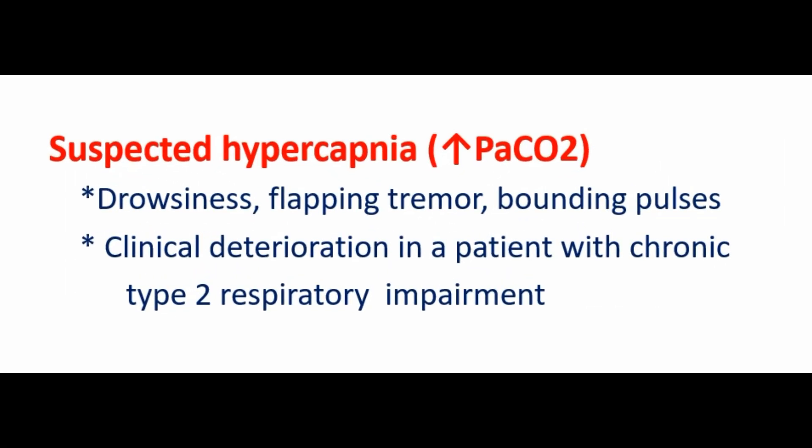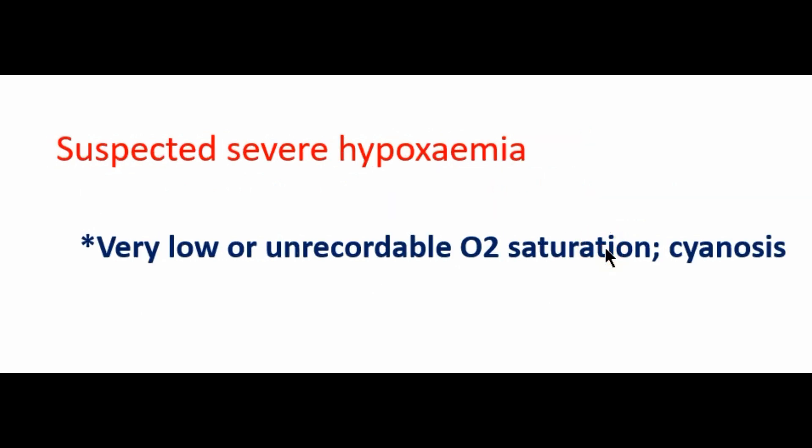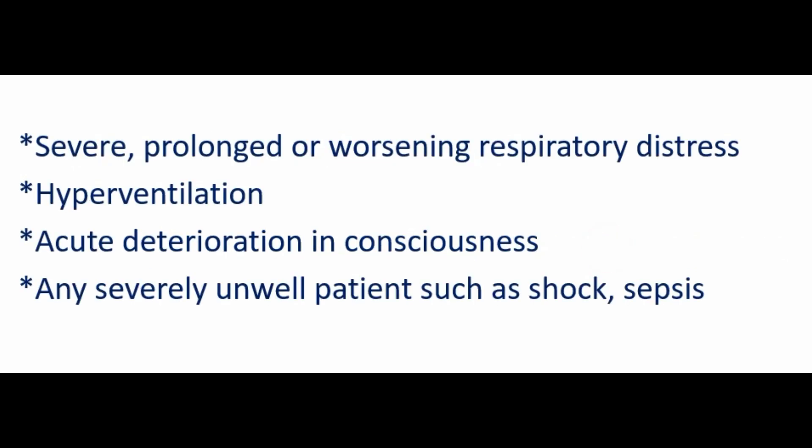What are the other indications? ABG is done in suspected hypercapnic patients — that is, increased partial pressure of carbon dioxide — proven by drowsiness, flapping tremor, and bounding pulses, or if there is clinical deterioration in patients with chronic type 2 respiratory impairment. It is also indicated in suspected severe hypoxemia, proven by very low or unacquirable oxygen saturation or cyanosis.